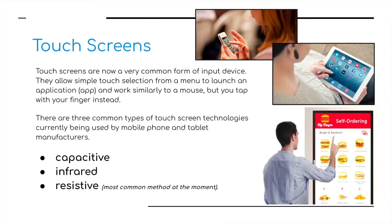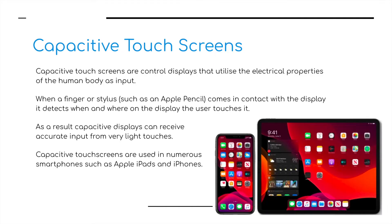Finally we move on to touch screens. We can break these down into three sections: capacitive, infrared, and resistive. Touch screens are a very common form of input device — they allow simple touch selection from a menu to launch an application, and work similar to a mouse but you tap with your finger instead. There are three common types of touch screen technology: capacitive, infrared, and resistive. We start with capacitive, as it is the most common.